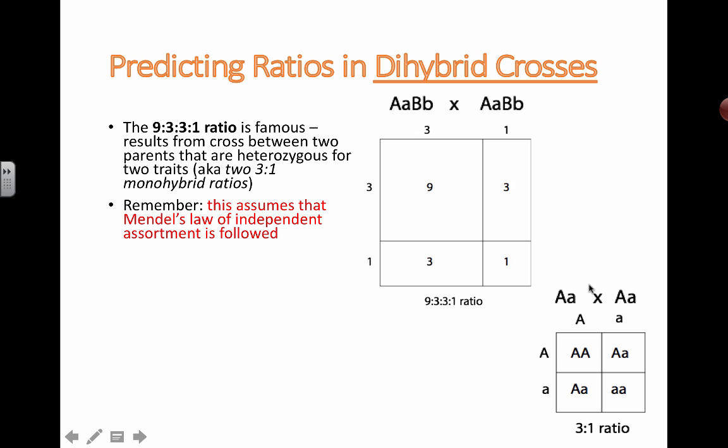So remember that in order for this to all work, we have to assume that Mendel's law of independent assortment is followed. That's a big mouthful and that's also explained elsewhere as well. But what this means is these two genes, whatever is coding for trait A and whatever is coding for trait B, means they're located on different chromosomes. That's what independent assortment means.